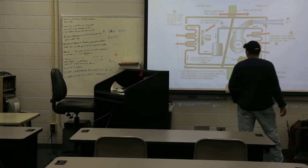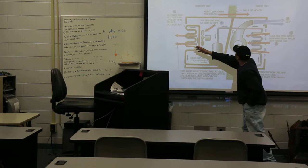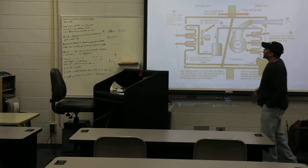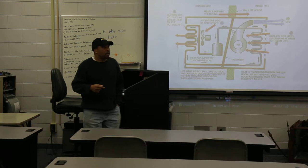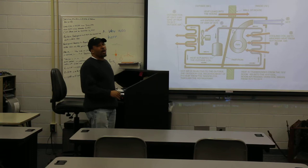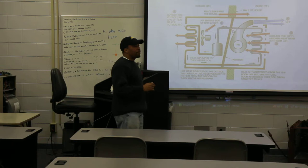The four basic components of the refrigeration cycle are the compressor, the condenser, the metering device, and the evaporator. It is a continuous looping cycle. All refrigeration, air conditioning, or what we would call comfort cooling systems have these four major components.